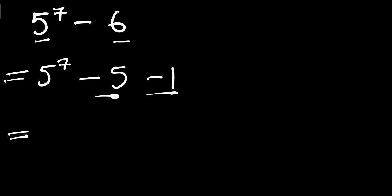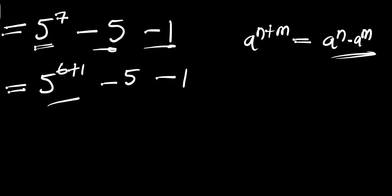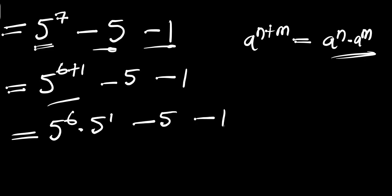So we can rewrite this as 5 to the power of 7, which becomes 5 to the power of 6 plus 1, then we have minus 5 minus 1. We apply the identity a to the power of m plus n equals a to the power of n times a to the power of m, giving us 5 power 6 times 5 power 1, minus 5 minus 1.